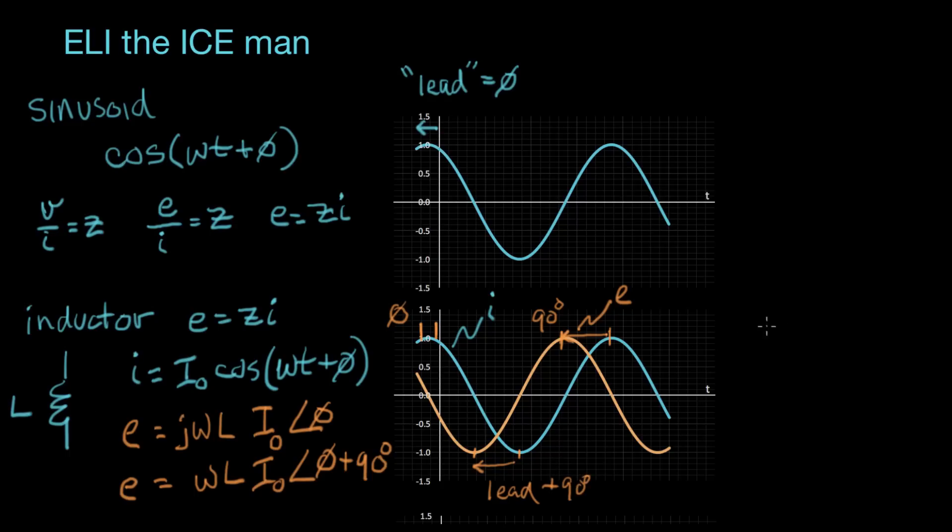So in an inductor, we say that E leads I by 90 degrees.